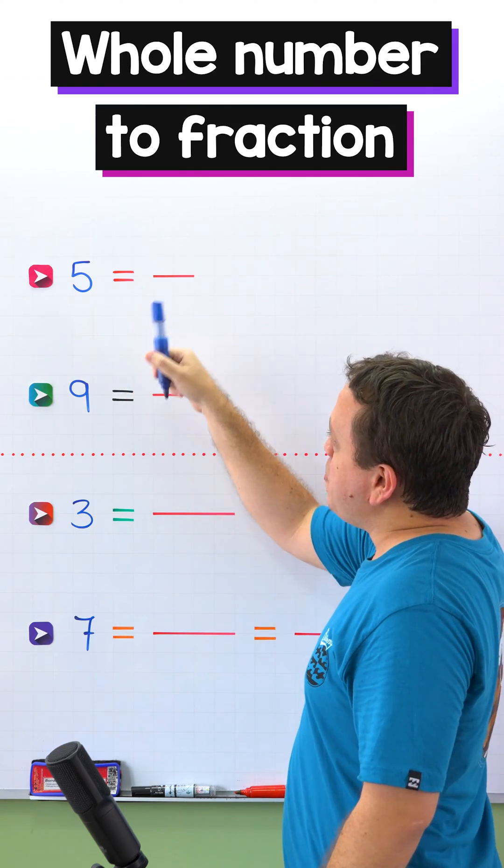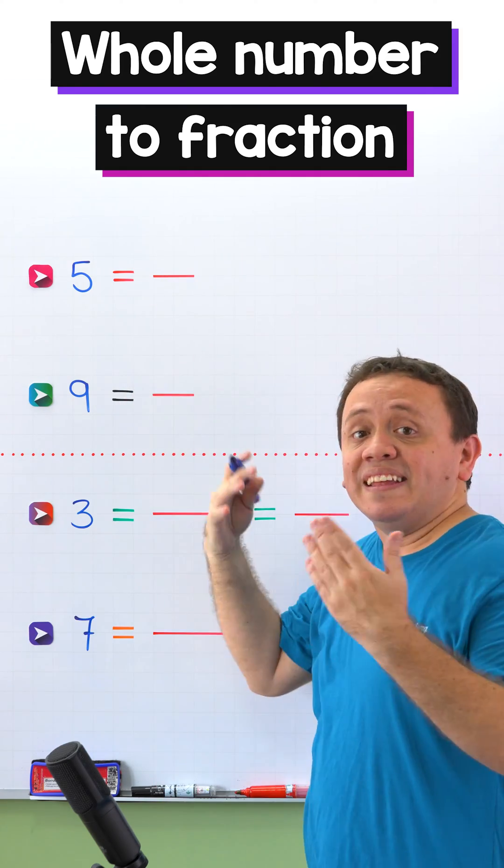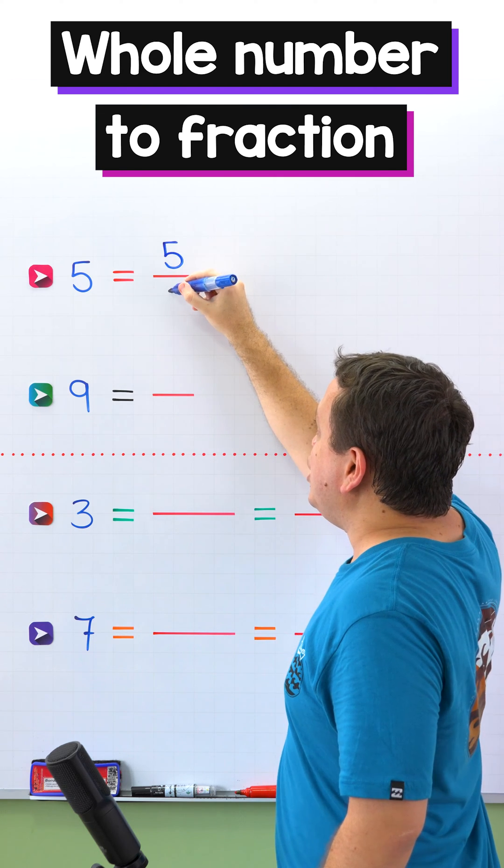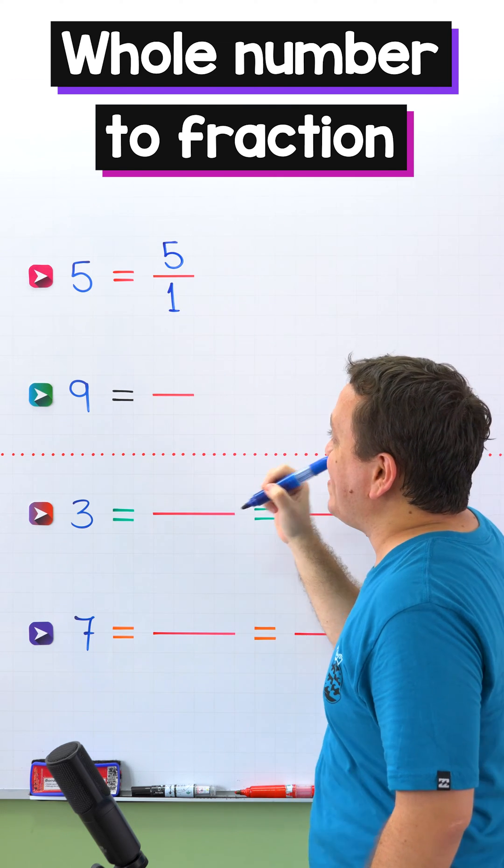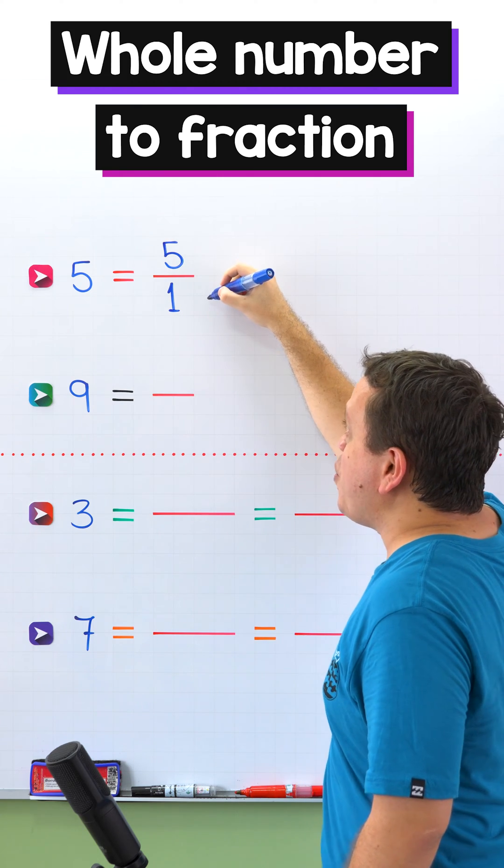In the first example we need to convert 5 to a fraction, and the easiest way to convert a whole number to a fraction is by putting 1 as a denominator, therefore 5 is equivalent to 5 over 1.